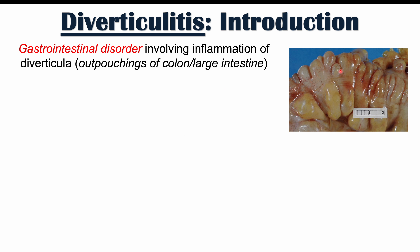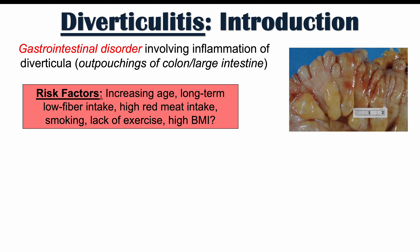What causes or increases the risk for having diverticula and ultimately diverticulitis? Some risk factors include increasing age. Because diverticula are due to weaknesses in the bowel wall, as we get older, due to the many times the large intestine has contracted over time, the bowel wall can become weaker with age. Another very important risk factor is long-term low fiber intake, which will be important when we talk about diets.